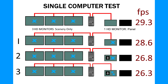Here's a summary of the tests I performed. At the top, just one monitor with the scenery running at 29.3. Option one: scenery on the computer plus one monitor running an X-Plane pop-out window. Option two: scenery plus one pop-out window plus an Air Manager panel on that monitor. Option three: scenery plus, on the fourth monitor, two X-Plane pop-out windows plus an Air Manager panel. You can see the frame rate drop from 28.6 down to 26.3 as you add more windows.